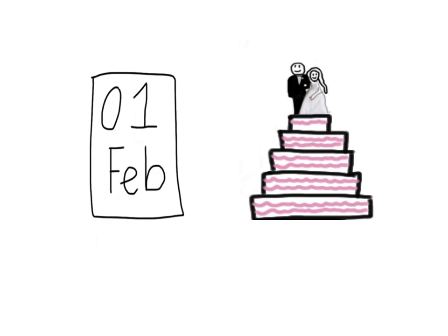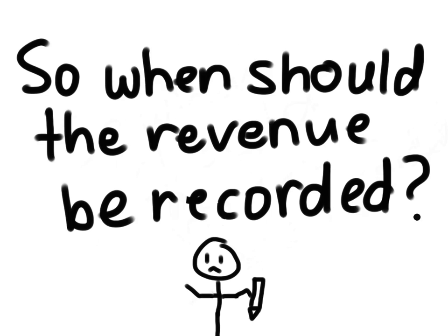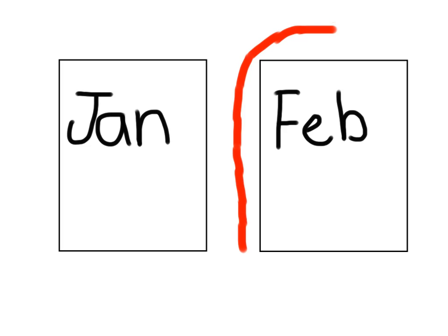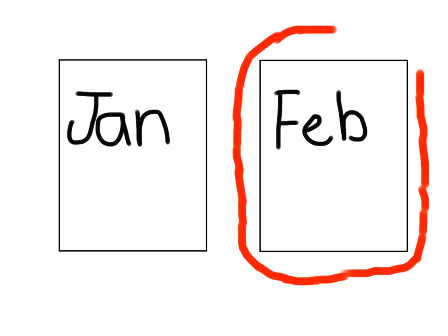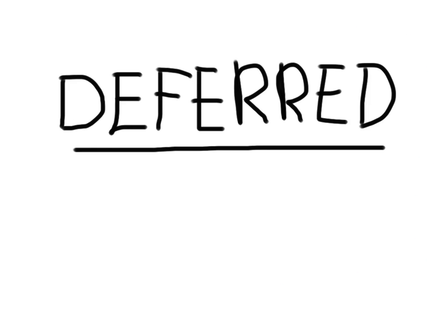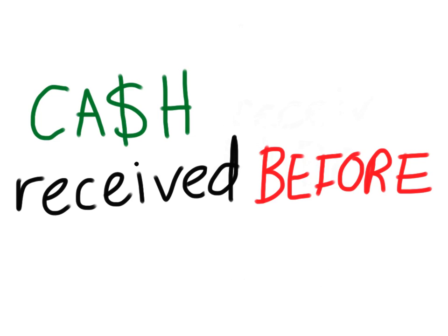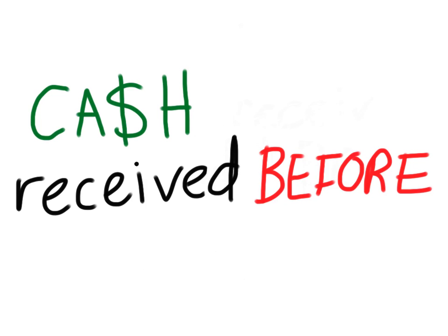So on the 1st of January the cash was received, but it was not until the 1st of February that the cake was actually provided. So when should the revenue be recorded? The revenue should be recorded in the month of February, because you did not actually earn the money until you gave your customer his cake. This is known as a deferred revenue — when cash is received before revenue is earned.